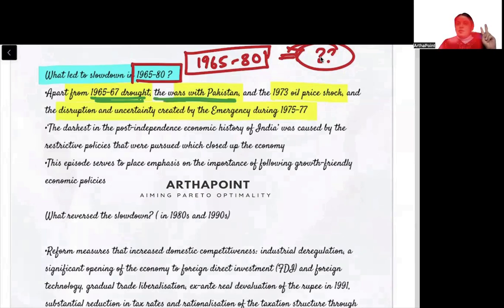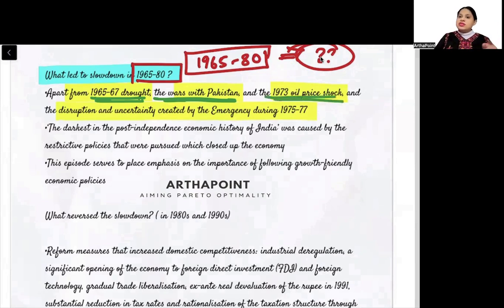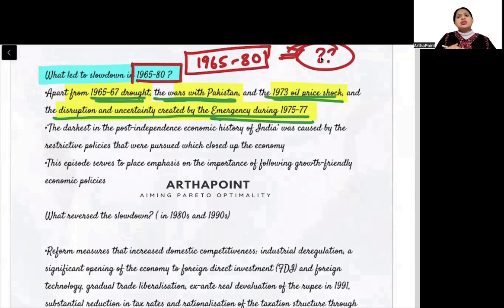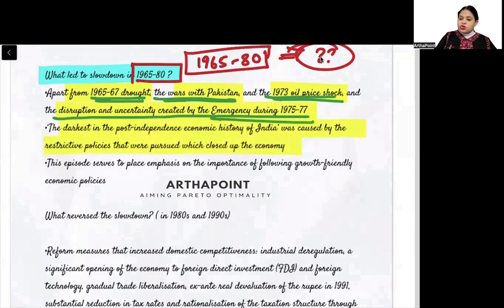Third was the 1973 oil price shock — oil price shock means inflation, and inflation automatically affects GDP. Fourth was disruption and uncertainty caused by the Emergency. There was a lockdown-like situation; industries were not working well, there was a heavy license raj system, and industries were not given freedom to operate on their own. The darkest period in post-independence economic history of India was caused by these restrictive policies that closed up the economy.